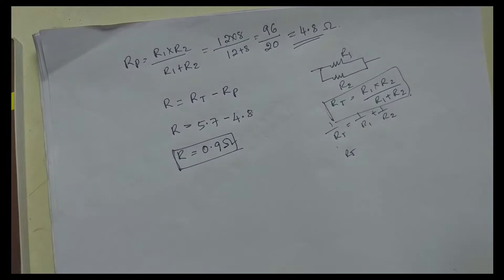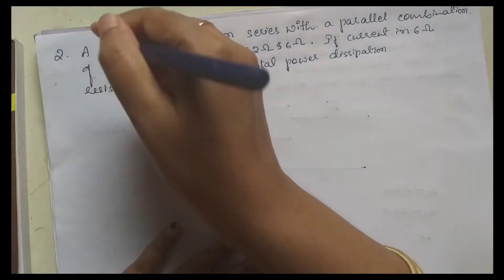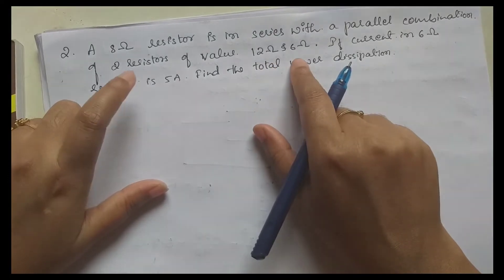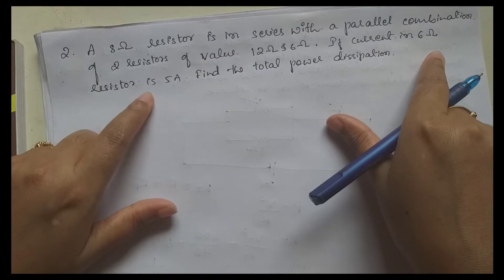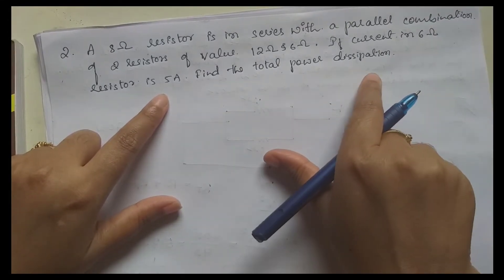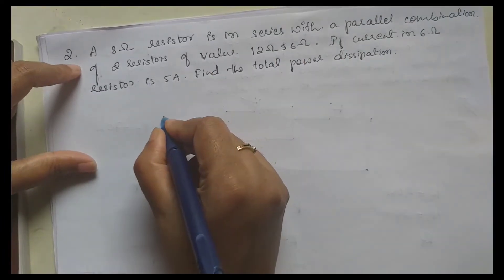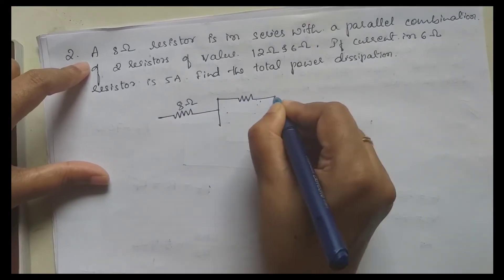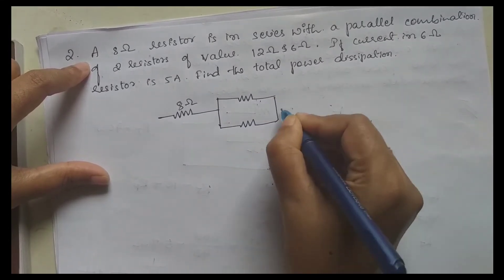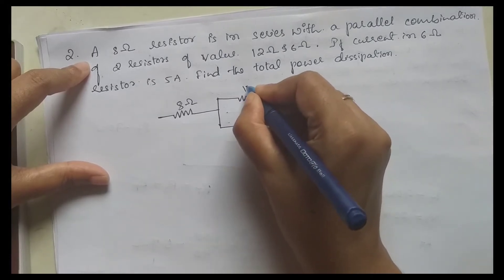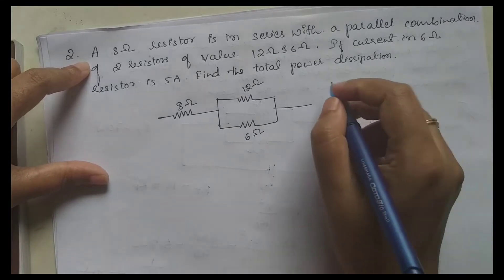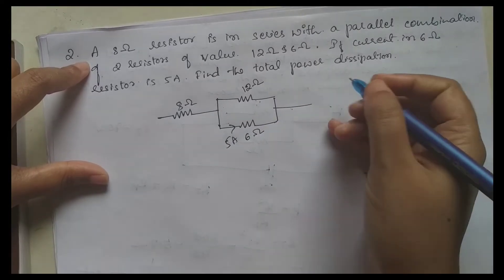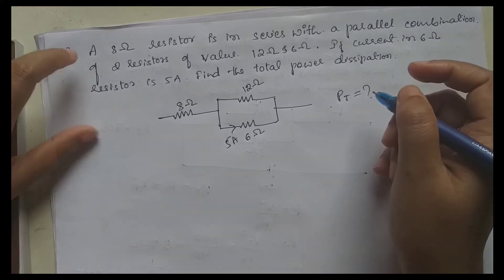Now the next problem: an 8 ohm resistor is in series with a parallel combination of two resistors of values 12 ohm and 6 ohm. If the current in the 6 ohm resistor is 5 amperes, find the total power dissipated.